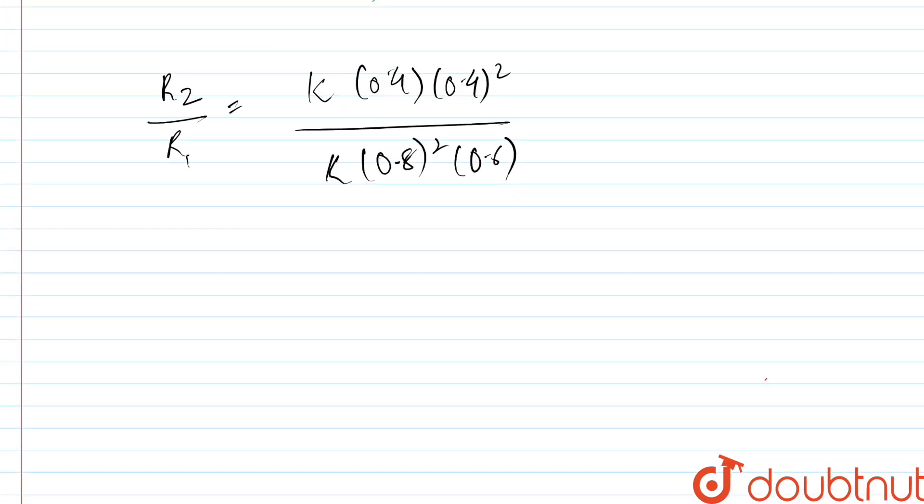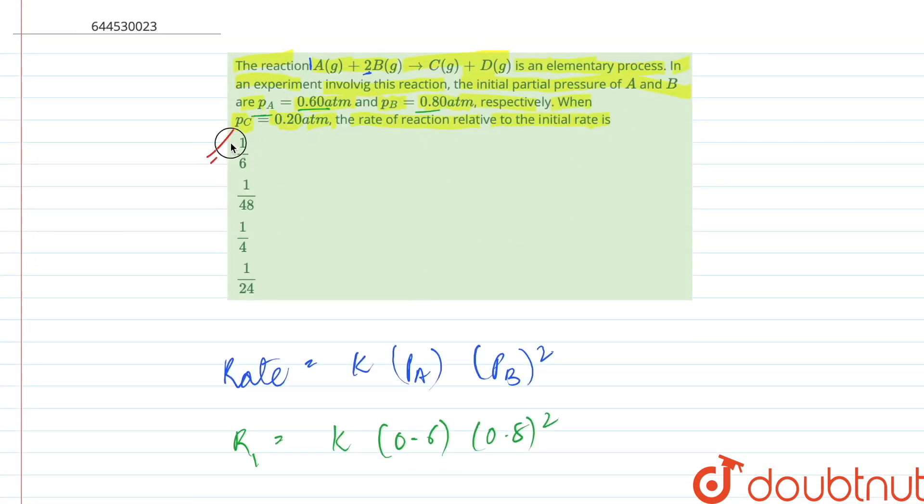0.8 square, 0.6. So since the rate constants are equal they'll eliminate, and finally we get r2 upon r1 equal to 1 upon 6. So the answer comes out to be A part.